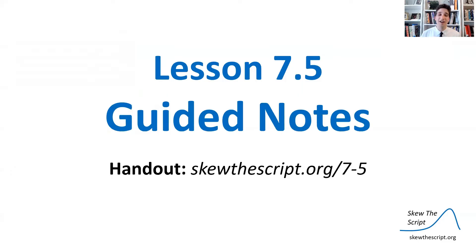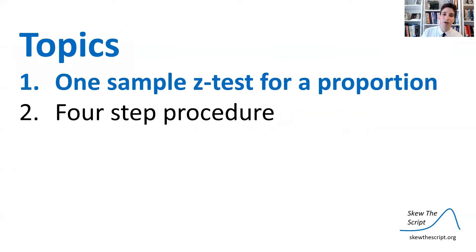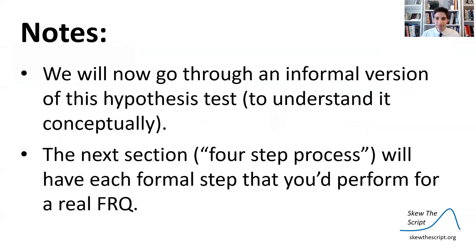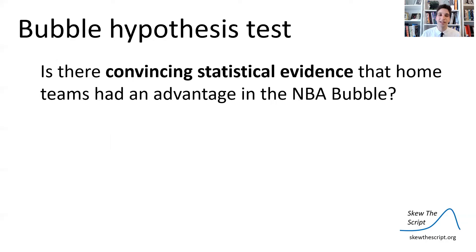If you'd like to follow along, print out our guided notes at this URL. We're going to conduct what's known as the one-sample Z-test for a proportion. First, we're going to go through an informal version of this hypothesis test to understand it conceptually. Then in the next section, we're going to do the four-step process — the steps for showing your work if this is a real free response question on the AP exam.